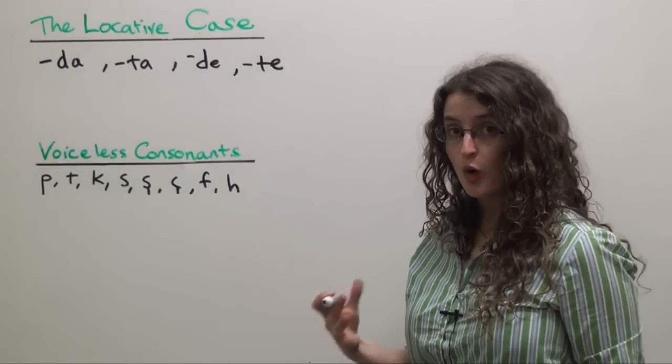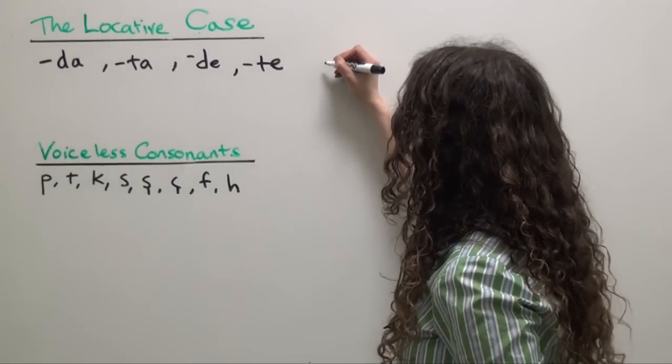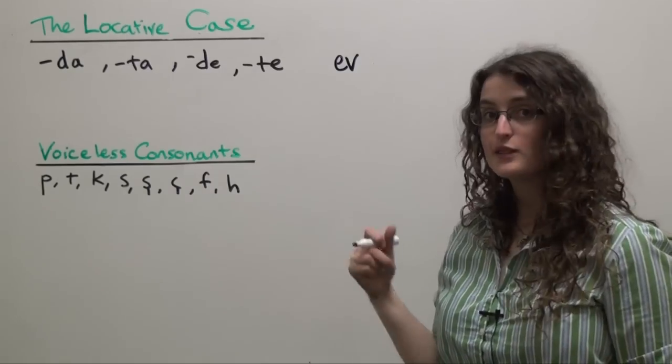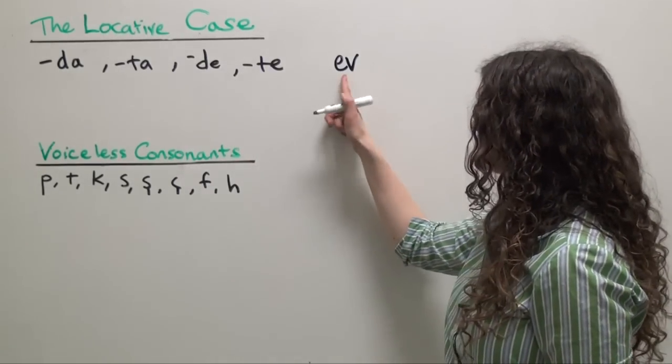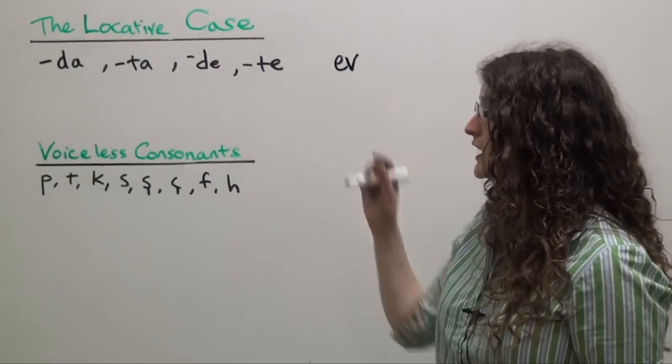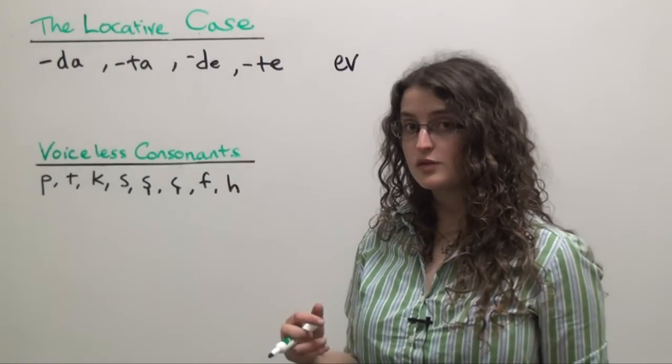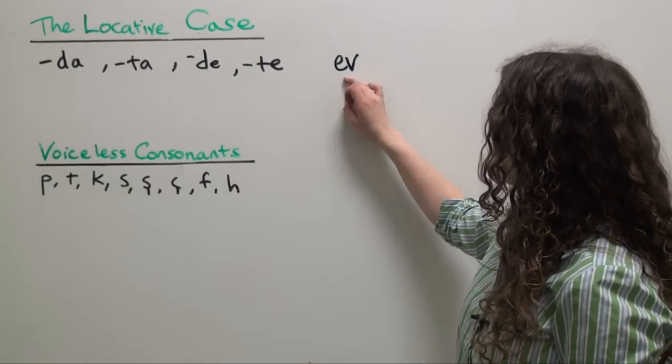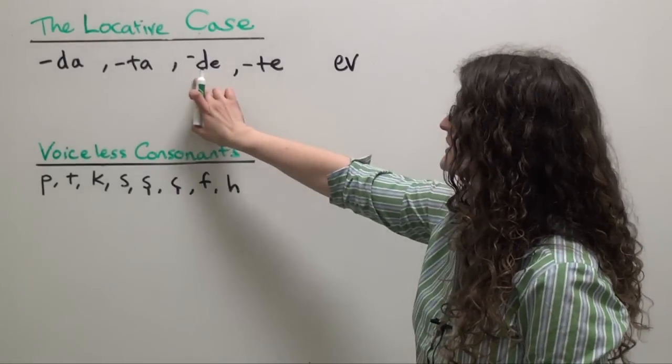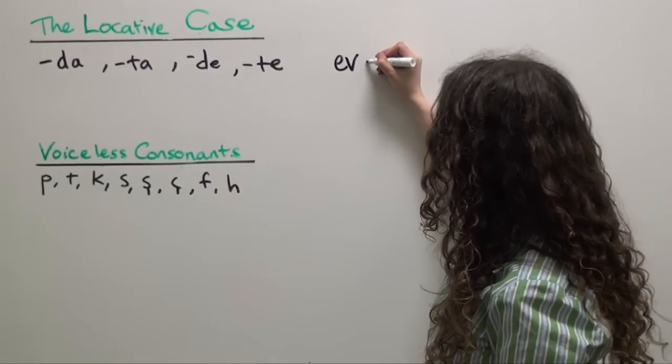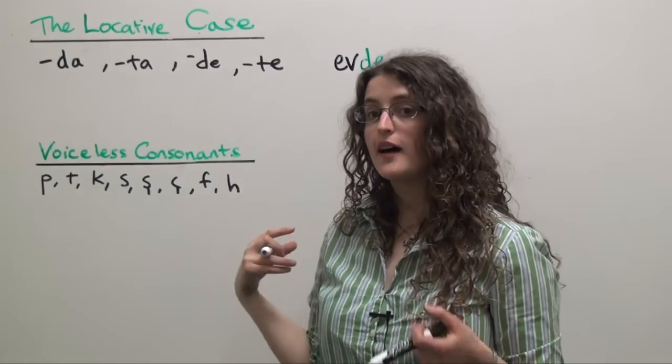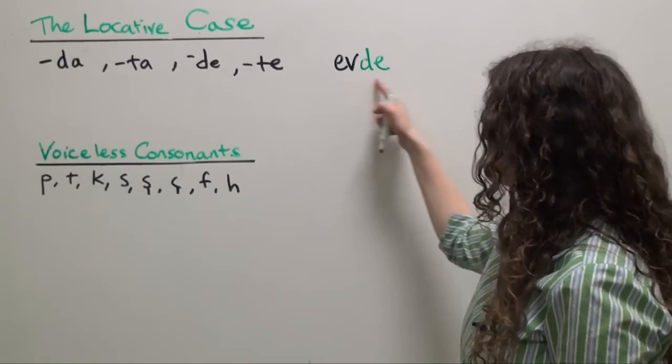So we'll start with the Turkish word for home or house: ev. And we'll attach the locative case ending directly to the noun ev. The locative case follows the rules of two-way vowel harmony, so for ev we're going to say evde. Evde, at home or in the house.